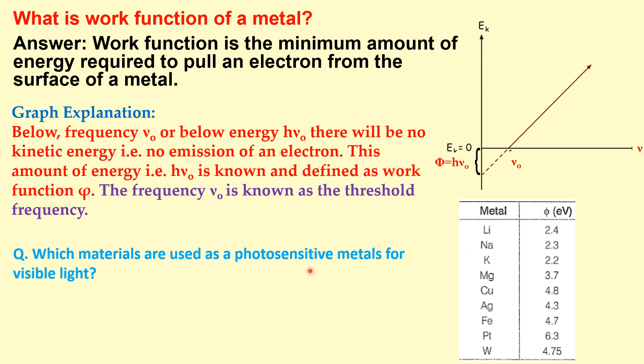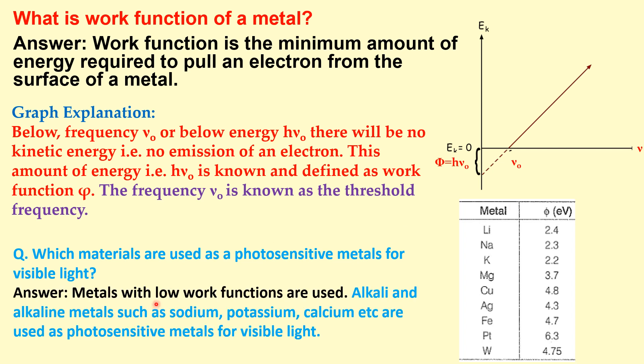Which materials are used for photosensitive metals for visible light? Metals with low work function are used, like alkali and alkaline metals such as sodium, potassium, and calcium are used as photosensitive metals for visible light.